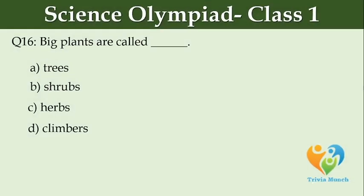Big plants are called dash. Option A: Trees. Option B: Shrubs. Option C: Herbs. Option D: Climbers.